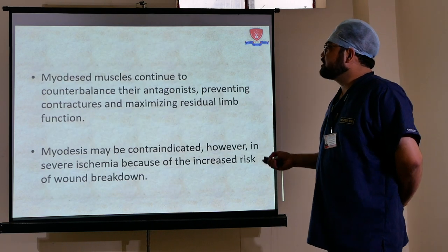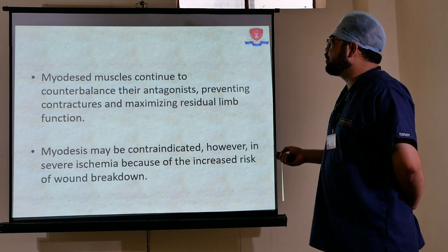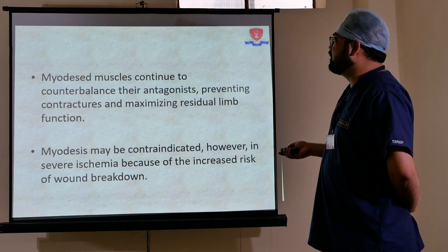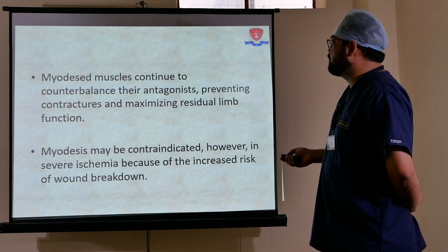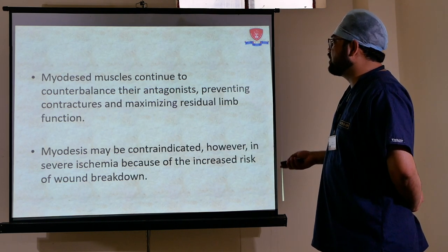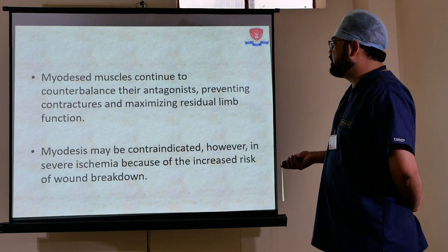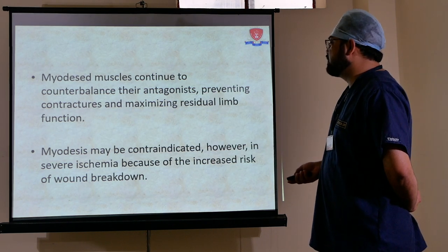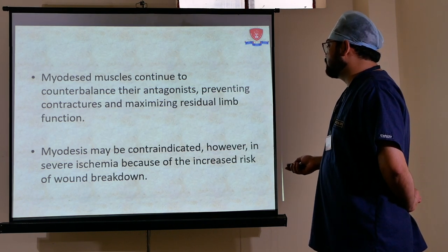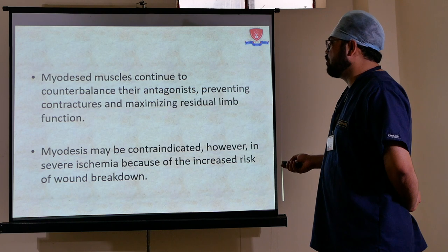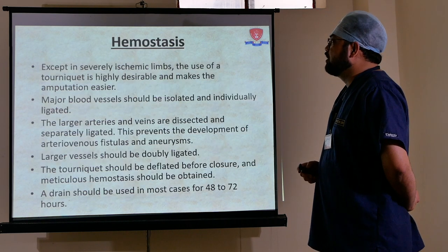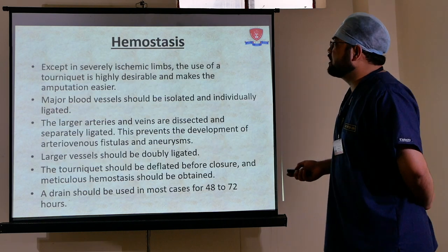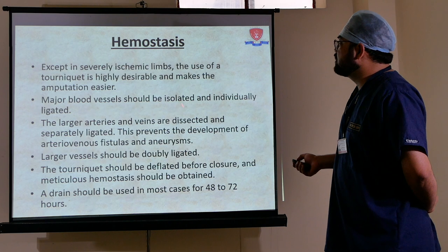Myodesis: muscles are sutured to their antagonists to prevent contracture and maximize residual limb function. Myodesis may be contraindicated in severe ischemia because of the increased risk of wound breakdown.